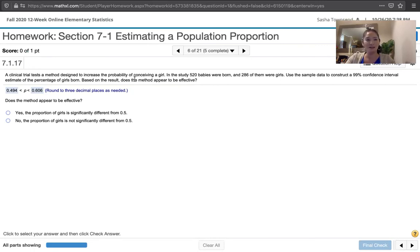And those are equally probable outcomes. That's what we typically assume. So we're going to say that that method appears to be effective if that true population proportion is not equal to 0.5. Or in other words, if 0.5 is not in between this lower bound and this upper bound, then we would say that that clinical trial tests a method that appears to be effective because the proportion of girls that you get is significantly more than 0.5.